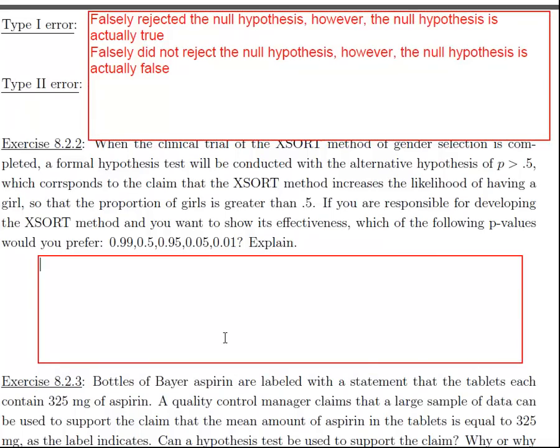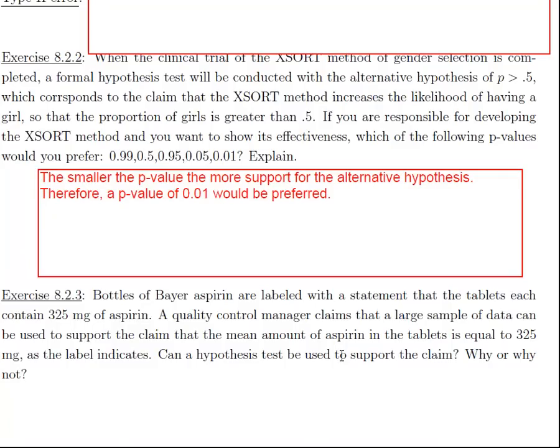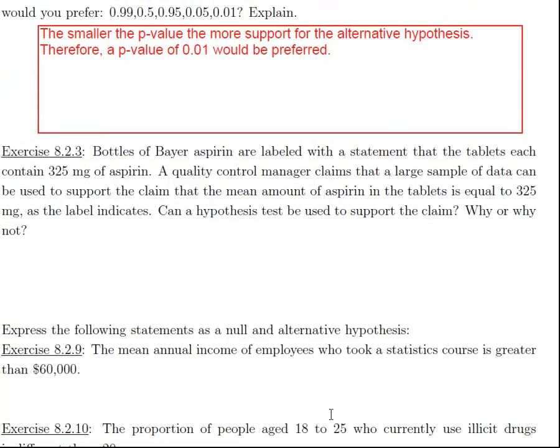If you work for this company or develop this product, then you would want to support the alternative hypothesis. You would want to support that this product works, which means that the proportion would be greater than 0.5. The smaller the p-value, the more support for the alternative hypothesis. Therefore, a p-value of 0.01 would be preferred. Remember the smaller the p-value, the more support for the alternative. We would reject the null and conclude that the product worked, or the proportion is greater than 50%, if you had a small p-value. So 0.01 would probably be the best one.